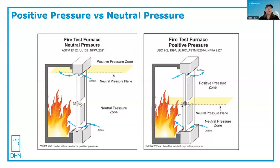So the positive pressure fire door test holds the cool area from underneath the door. But now because the neutral pressure plane is at 40 inches above the sill, any hot smoke, gases, or even potentially flame can be forced out through the top portion of the door. That's why intumescent gasketing is required to pass the positive pressure fire door test for wood doors. Metal doors don't need it because they expand when they heat.